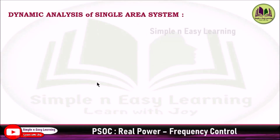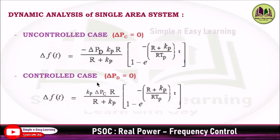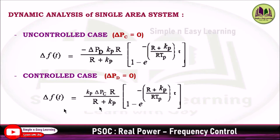For dynamic analysis of a single area system: for the uncontrolled case with del PC equal to 0, del f(t) equals the first expression; and for the controlled case with del PD equal to 0, del f(t) equals the second expression.